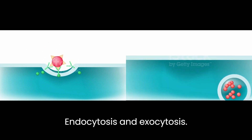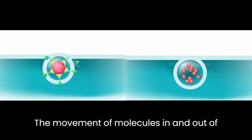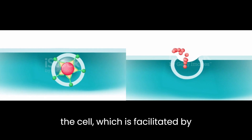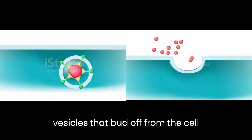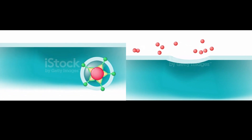Endocytosis and exocytosis involve the movement of molecules in and out of the cell, which is facilitated by vesicles that bud off from the cell membrane.